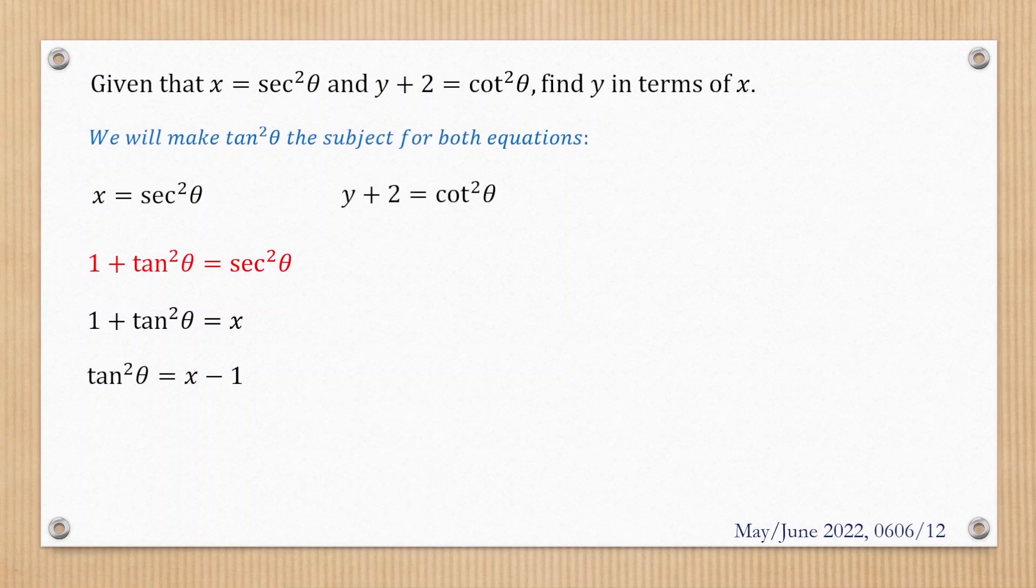In the second equation, we have y plus 2 equals cot²θ. This time, we'll use the identity tan²θ equals 1 over cot²θ. We'll replace cot²θ with y plus 2.